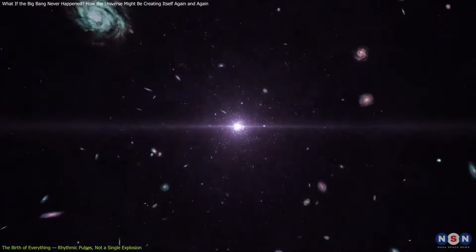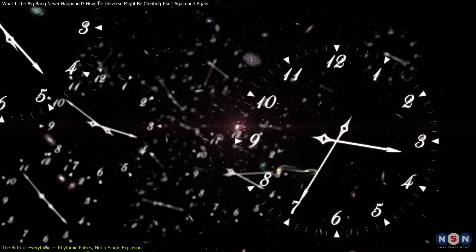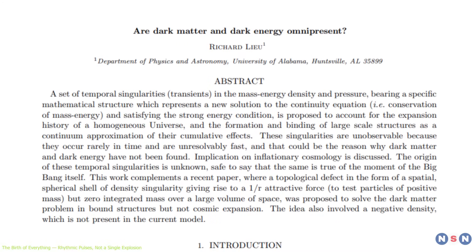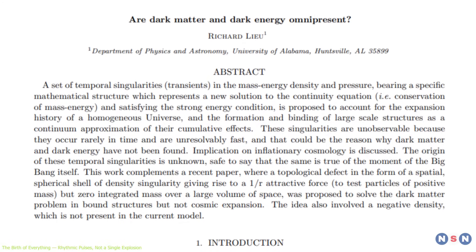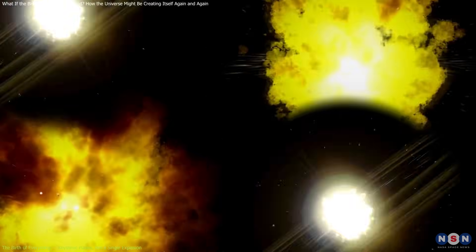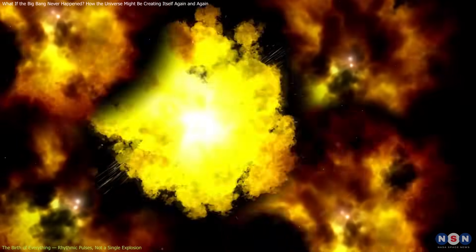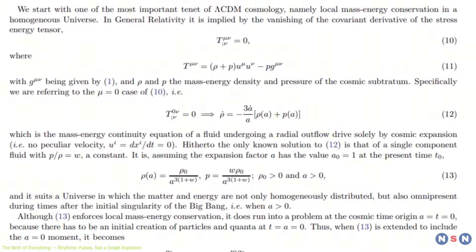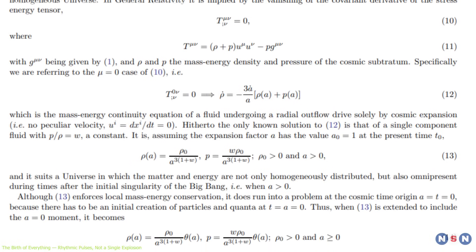The conventional Big Bang model describes an all-at-once birth of matter, space, and time. In contrast, Dr. Liu's framework introduces a series of fast, uniform events that unfold rhythmically, delivering matter and energy in bursts rather than one immense explosion.